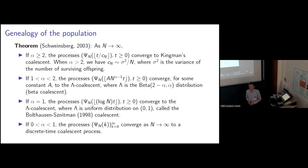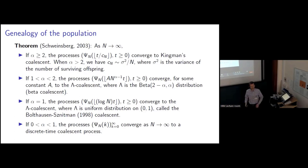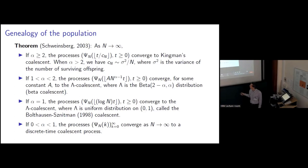It's also instructive to think about what's happening to the time scaling. When alpha is greater than 2, so that the offspring distribution has finite variance, the probability that two individuals have the same parent is asymptotically sigma squared over N, where sigma squared is the variance of the number of offspring of one individual that survive. In order to get a non-trivial limit, we need to speed up time by a factor of order N, just as in the Wright-Fisher model. When alpha is between 1 and 2, large families happen more often, so we only have to speed up time by N to the alpha minus 1. When alpha is equal to 1, large families happen even more often, and we only have to speed up time by log N, because the probability that two individuals have the same parent is asymptotically 1 over log N.